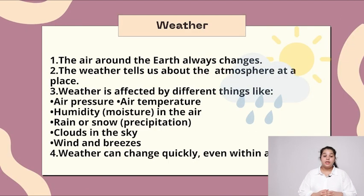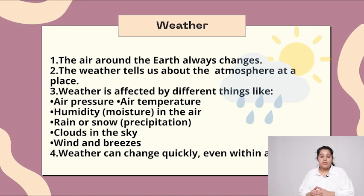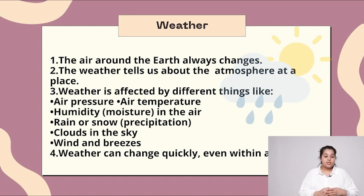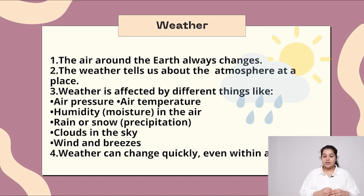Weather. The air around the earth always changes. Weather tells us about the atmosphere at places. Weather is affected by different things like air pressure, air temperature, humidity in the air, rain or snow, clouds in the sky, wind and breezes. Weather can quickly change even within a day.